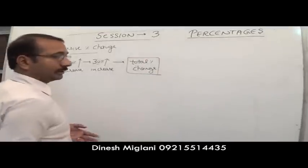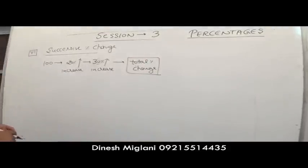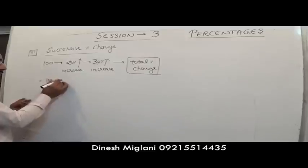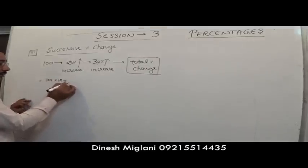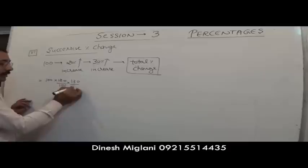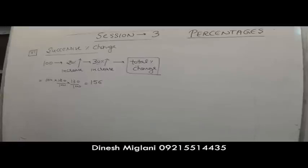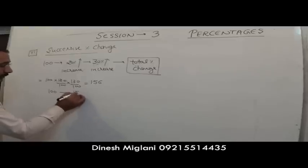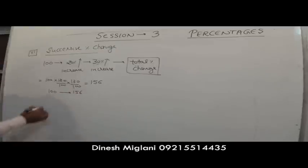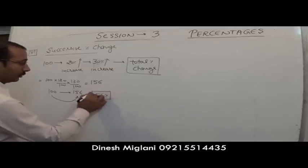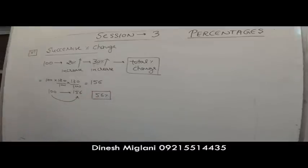Take 100 as base. Multiply: 120/100 × 130/100 = 156. The number went from 100 to 156, so the overall percentage change is 56%.